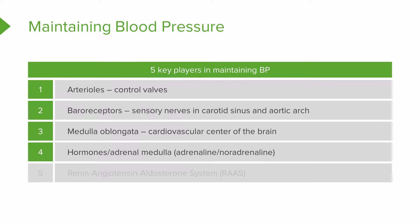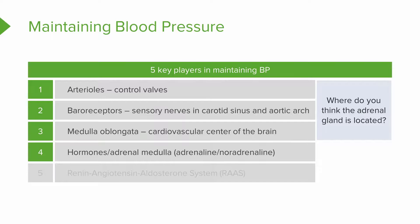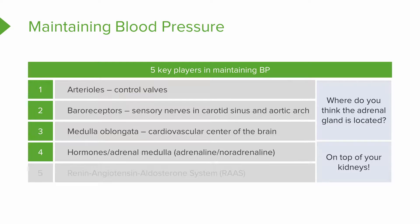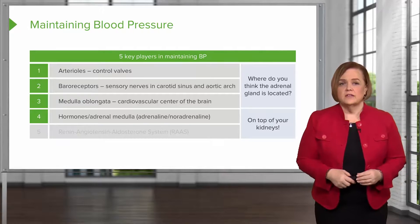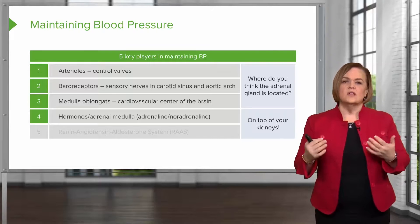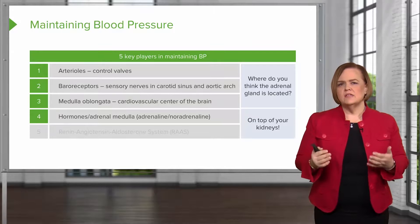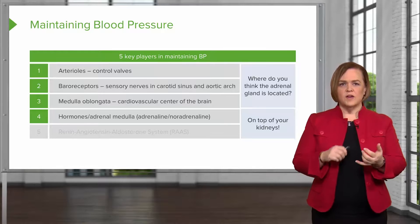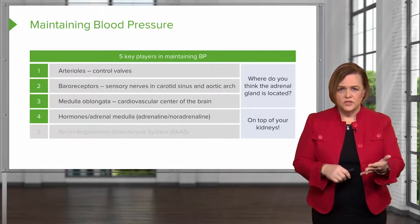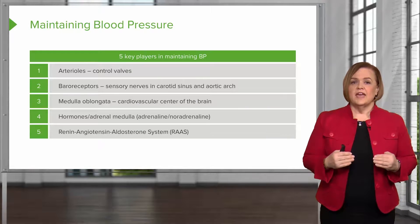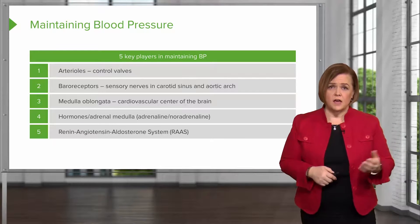Key player number four is hormones from the adrenal medulla. The adrenal glands sit on top of your kidneys — the medulla is one of two parts of the adrenal gland, along with the adrenal cortex. The adrenal cortex produces corticosteroids and glucocorticoids, but when we're talking about maintaining blood pressure, we're addressing things in the adrenal medulla. Finally, number five is the renin-angiotensin-aldosterone system — the RAS — and we're going to dig deeper into that in the upcoming parts of the video.